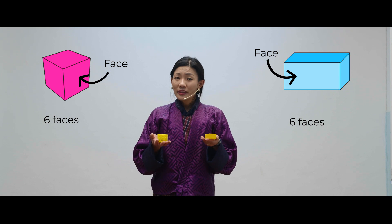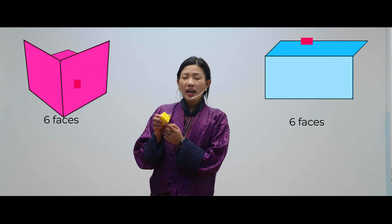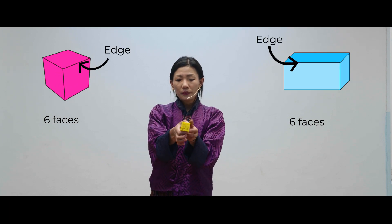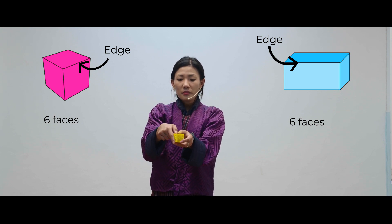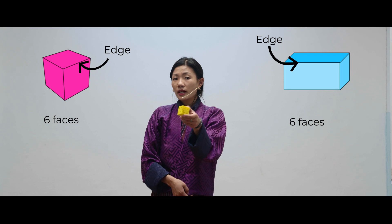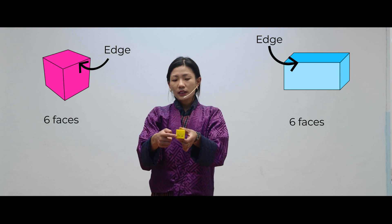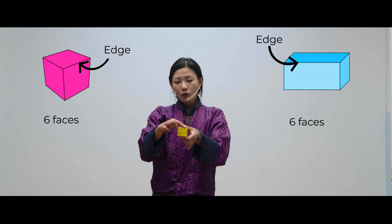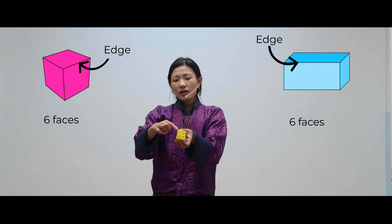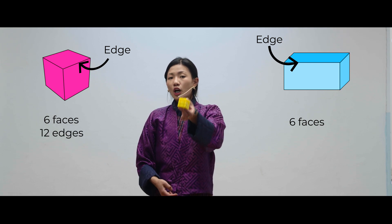They also have something in common — they also have something called the edge. An edge is where two faces meet and create a line. This face and this face, they meet at this point, forming a straight line here — that is called an edge. Let's count the number of edges for the cube: 1, 2, 3, 4, 5, 6, 7, 8, 9, 10, 11, and 12. A cube has 12 edges.